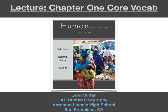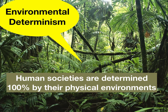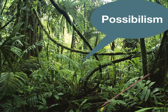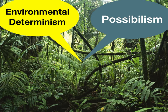We're going to start with the last couple terms and then go back to the first few. The last couple terms are environmental determinism and possibilism. The basic idea behind environmental determinism is that human societies are really determined close to 100% by their physical environments. In contrast, possibilism is the belief that physical environments play a part in shaping societies, but there are many other possibilities in how development occurs. So these two ideas are sort of at odds with each other.